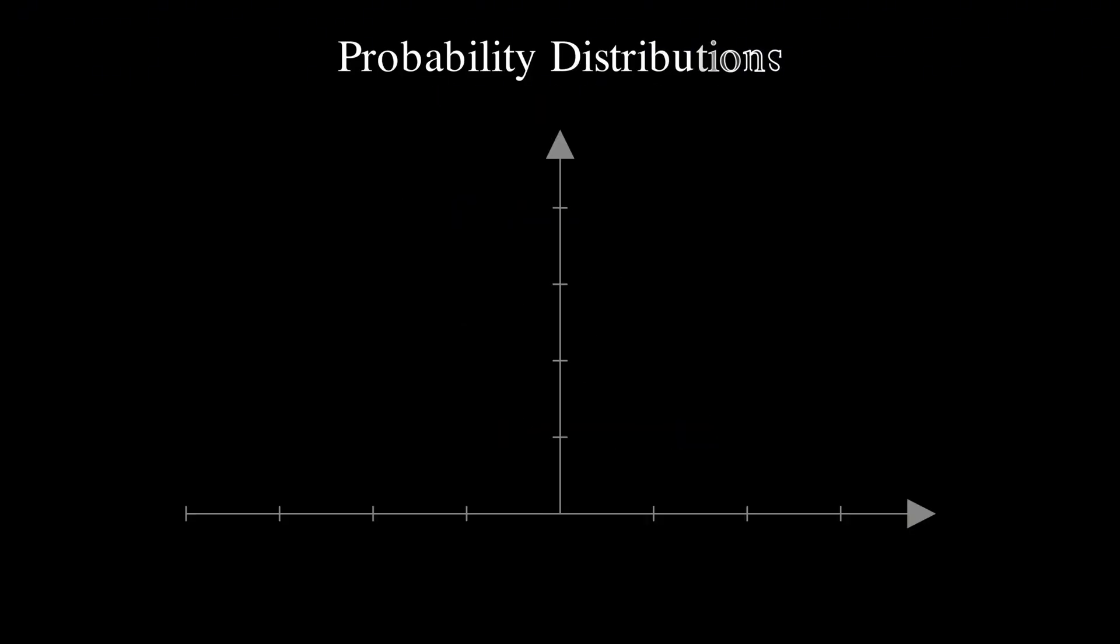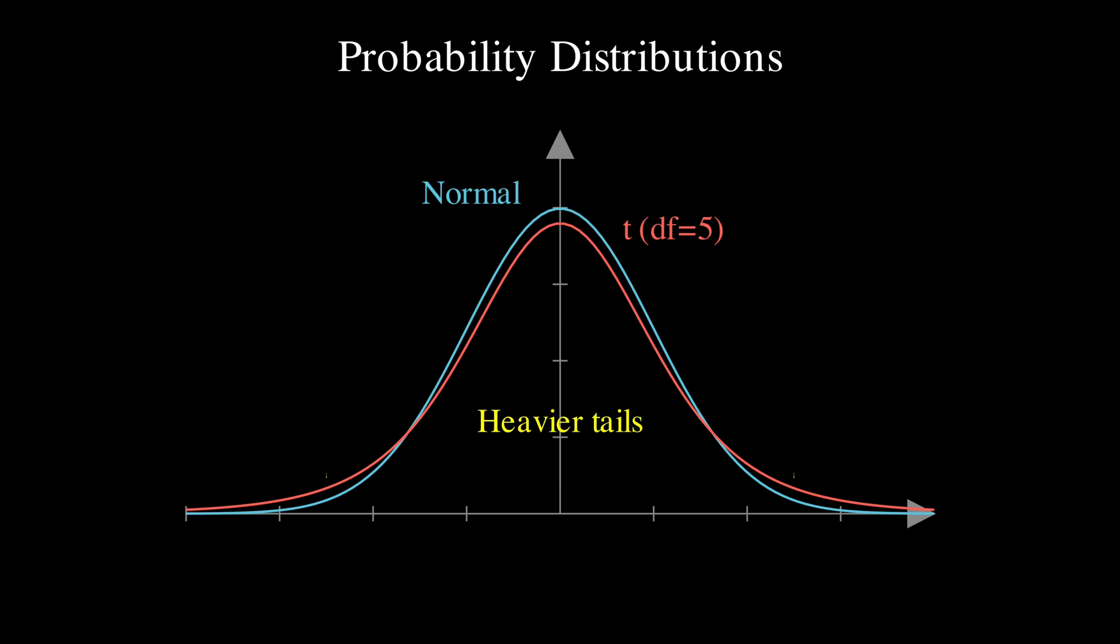So Gossett developed the t-distribution to account for this extra uncertainty. The key insight was that when we calculate what's called a t-statistic, which is the sample mean minus the population mean, divided by the standard error, where we use S divided by the square root of n. This statistic follows a specific distribution that has heavier tails than the normal distribution. These heavier tails are really important because they reflect the fact that when we are estimating the standard deviation from a small sample, we are more likely to see extreme values than we would if we knew the true standard deviation.